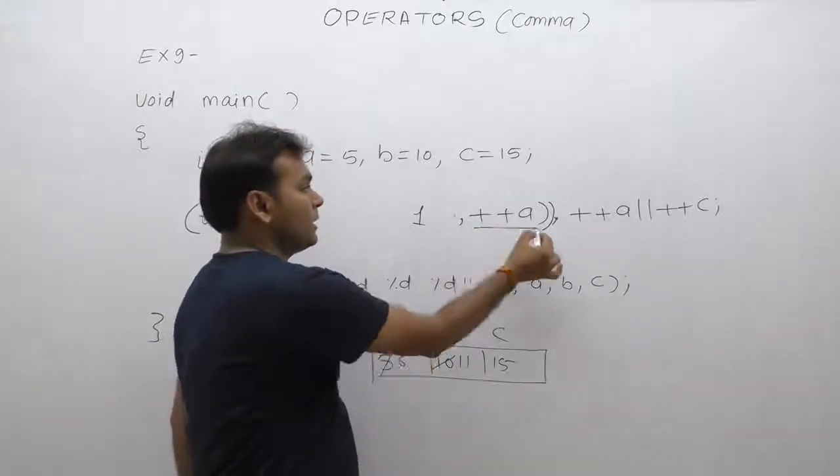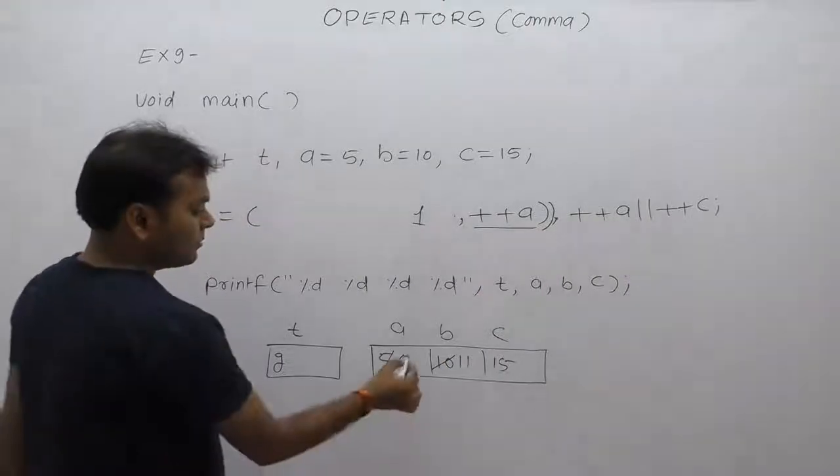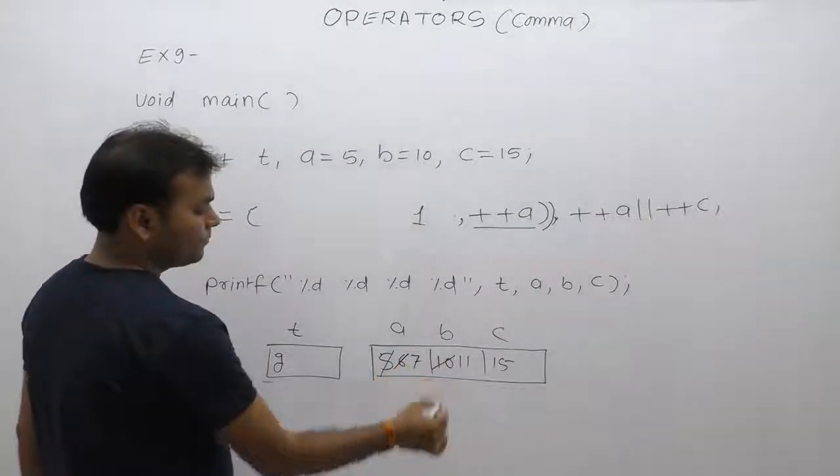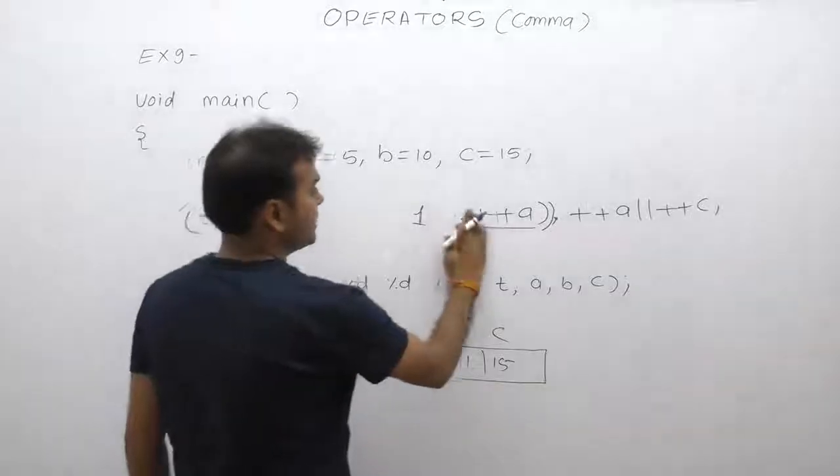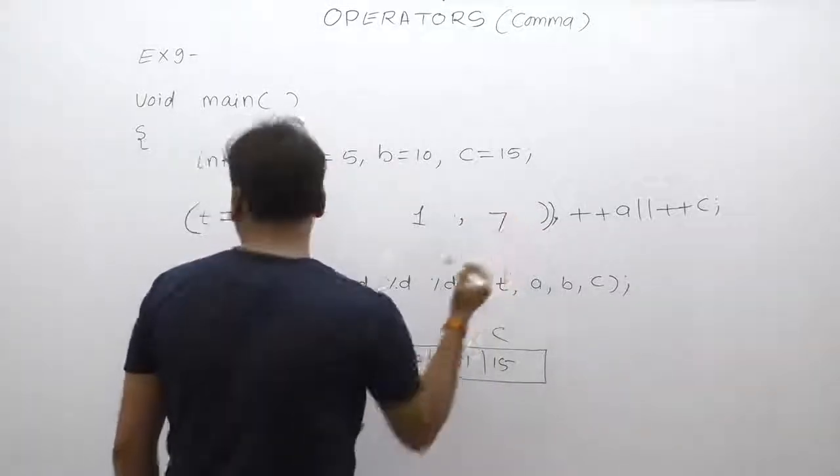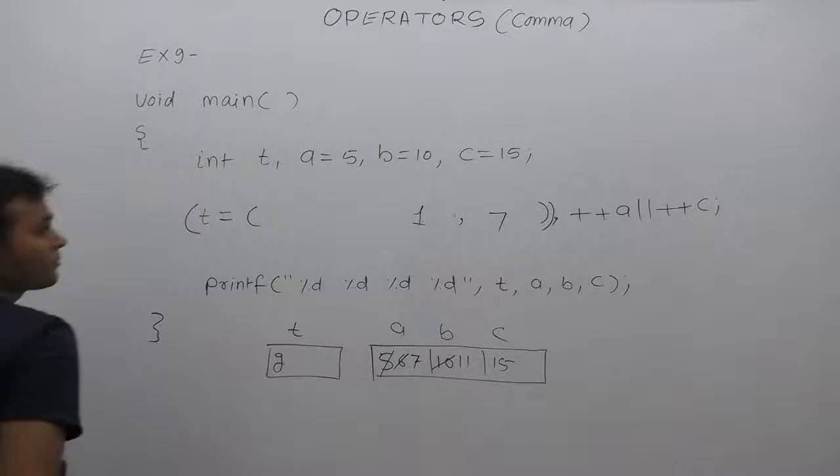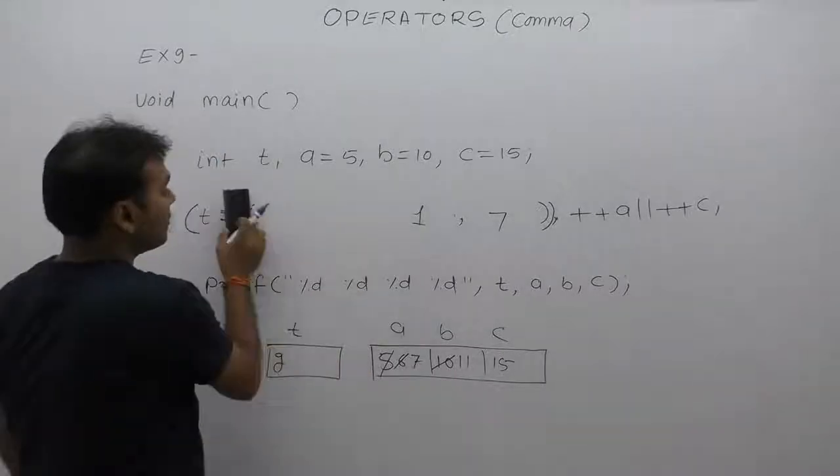Second expression is pre-A. So here is the case of pre-increment, then replace incremented value of A here, which is 7. Find this expression here. Real care of 1, comma, 7.